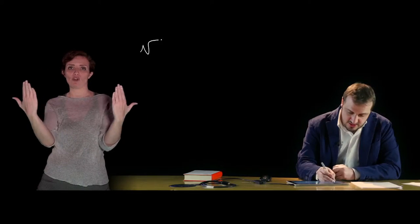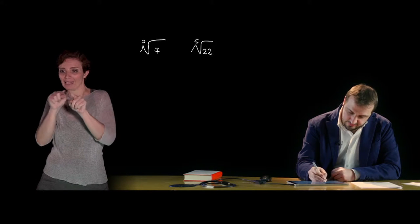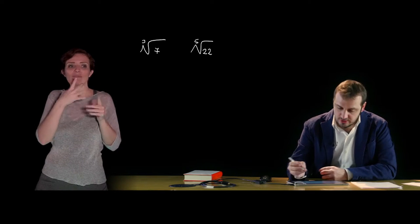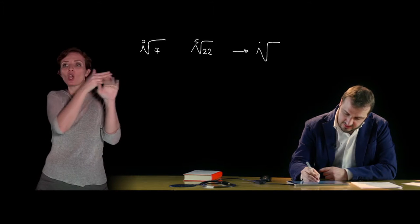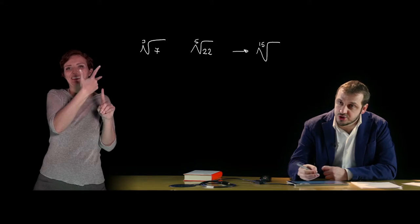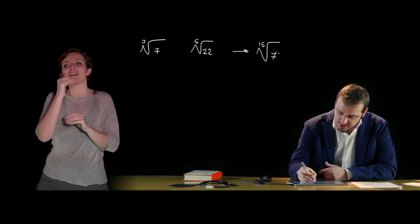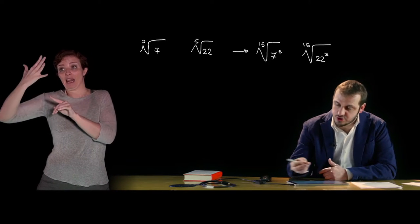Simplification is important because, combined with the invariant property, it allows us to compare radicals with different indices. For example, to compare the cube root of 7 and the fifth root of 22, we need to find the least common index. The LCM of 3 and 5 is 15. We multiply the index of the first radical by 5, and also the exponent (which is 1), obtaining the 15th root of 7 to the 5th. Analogously, we multiply the index of the second by 3, obtaining the 15th root of 22 to the 3rd, and can then compare them.